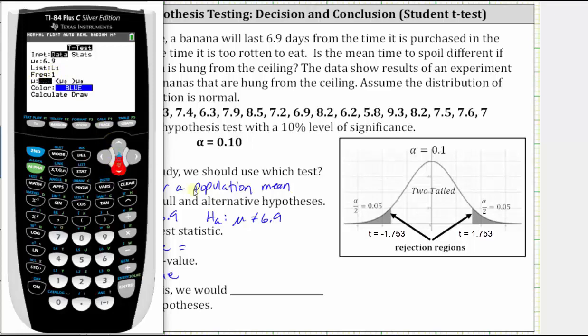The alternative hypothesis is mu doesn't equal 6.9, and therefore we select it doesn't equal, which I've already done, arrow down to calculate, and press enter. And we have a t-score of approximately 2.66, and a p-value of approximately 0.0179.